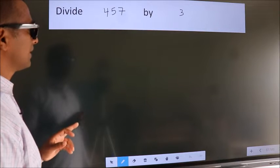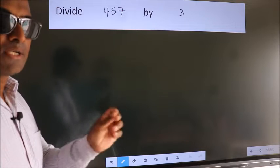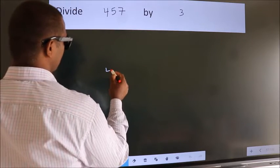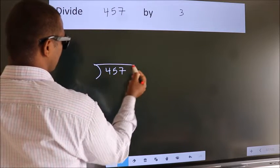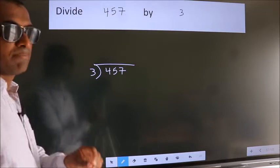Divide 457 by 3. To do this division, we should frame it in this way. 457 here, 3 here. This is your step 1.